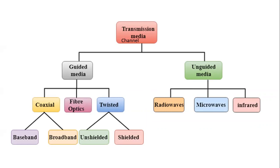We can use any type of media depending upon how much data we are sending. For telephone lines and internet, we mostly use guided media. For satellite transmission, it becomes unguided media. In guided media, you can use coaxial cable, fiber optic, or twisted cables. Coaxial and twisted cables carry data as electric pulses, whereas fiber optic carries data as light. Fiber optic is mostly used in submarines or long-distance transmission between countries across oceans.